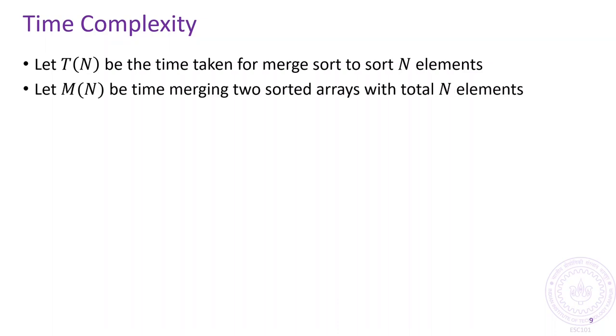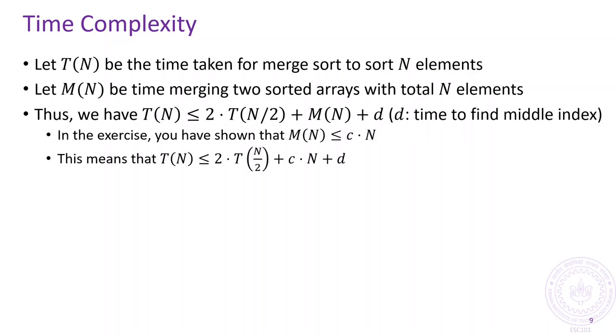Having studied the merge step, we can now move on to finding the asymptotic time complexity of the merge sort algorithm. Let T be the time taken by merge sort to sort n elements and let M be the time taken by the merge algorithm to merge two arrays with the total of n elements. Since merge sort simply breaks the array in half, calls itself recursively and merges the sorted versions of the two smaller arrays, it is clear that T is less than or equal to 2 times T of n by 2 plus M of n plus d, where d is the time taken to find the middle point at which to split the array.